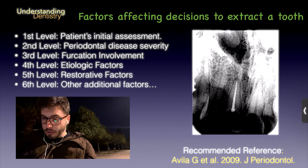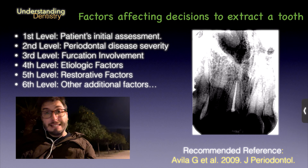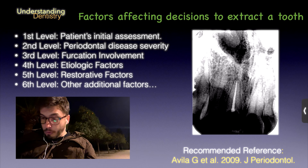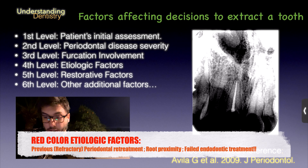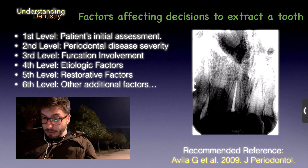The fourth level covers etiologic factors. Presence of calculus — if yes, it is actually green, because it can be treated. Surgery compromising bone dimensions and periodontal retreatment are considered: if no retreatment is needed, it's green; if recurrent, yellow; if refractory, red. Root proximity is also assessed. For root canal therapy, if there is a failing endodontic treatment, that is a red color.